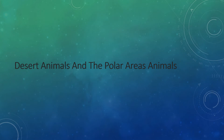In this slide, we are going to discuss about land areas. Let us study about two land areas having opposite features: desert animals and polar animals. These animals come under the terrestrial animal category.